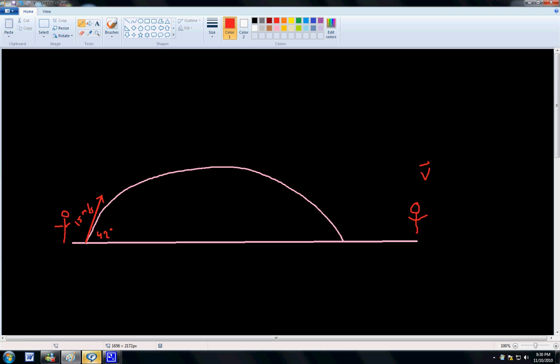So v equals displacement over time. So we'll use two equations to find time and then displacement. Time is always calculated by the vertical velocity. Displacement is always calculated by the horizontal velocity. You just have to remember this.